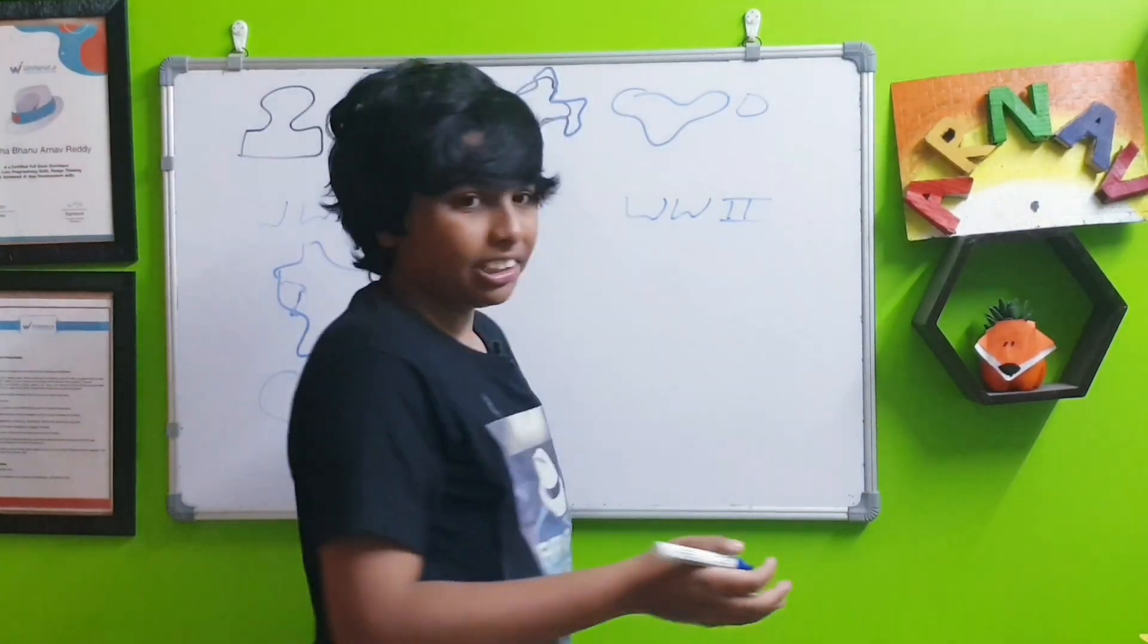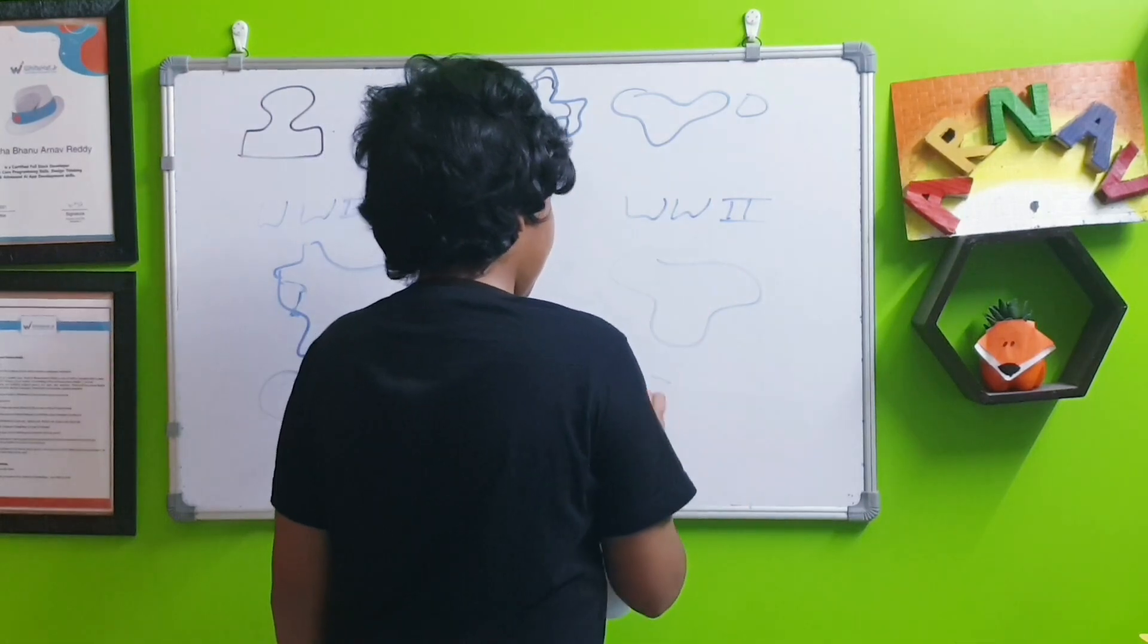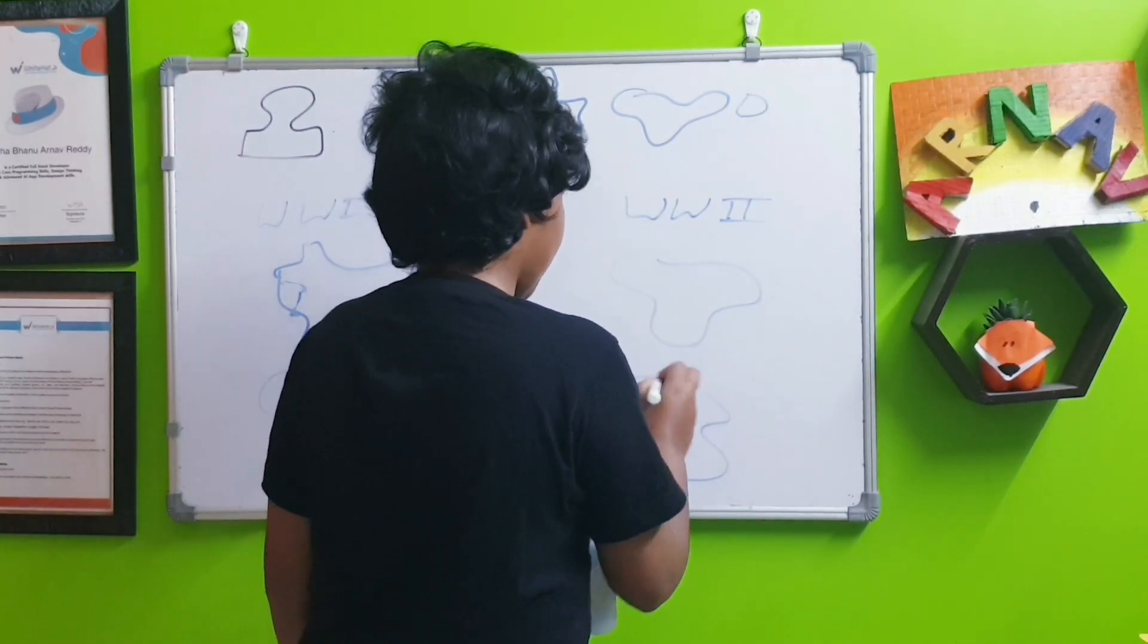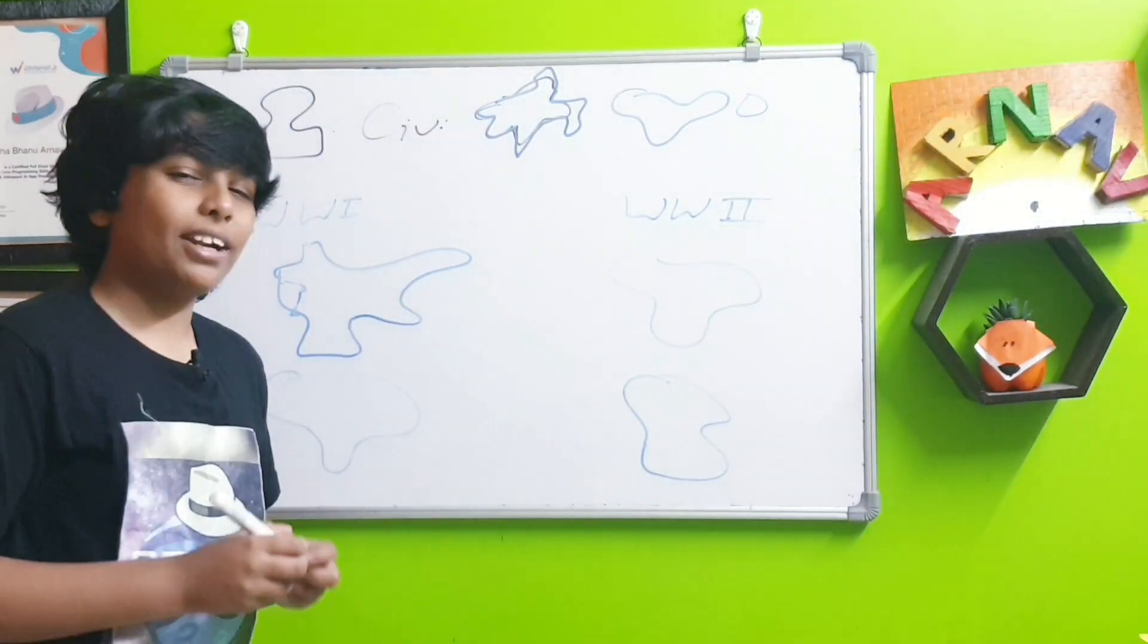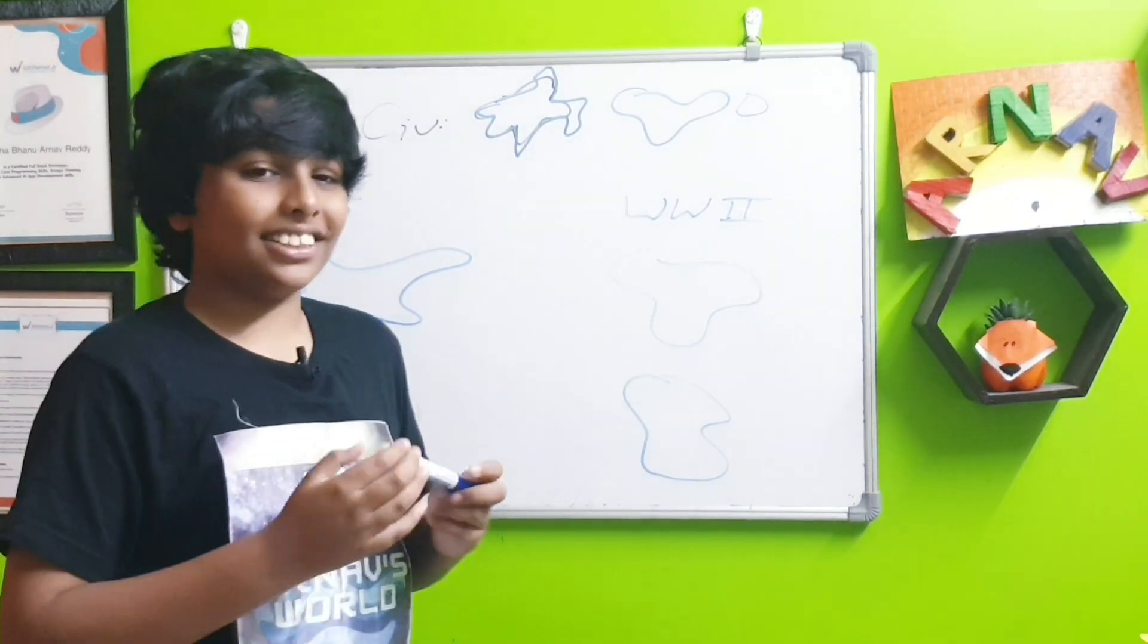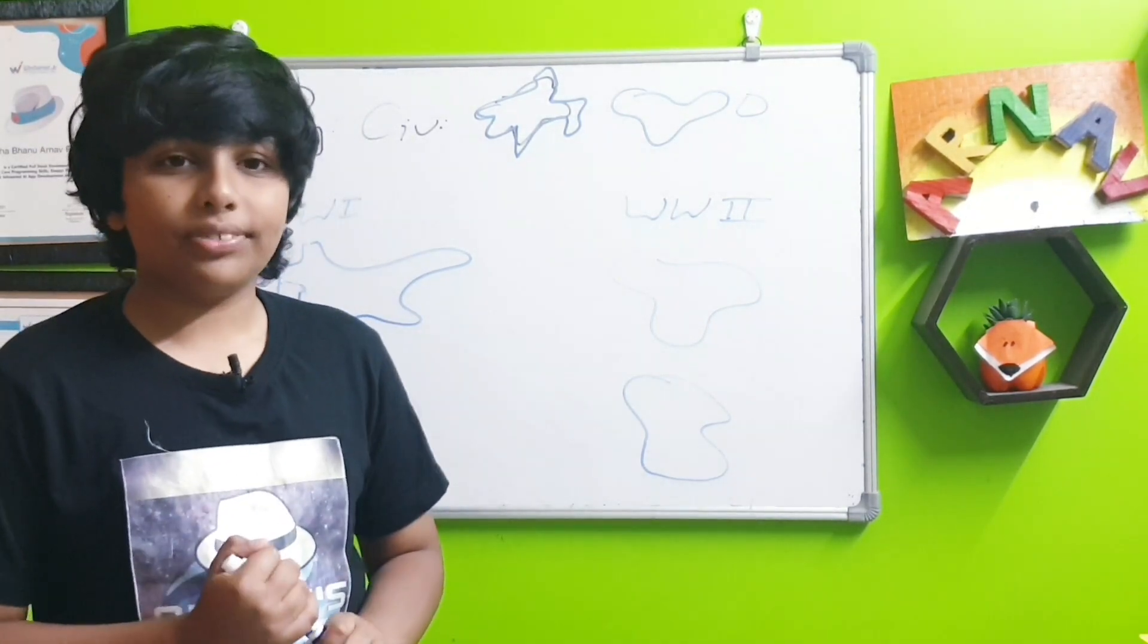Territorial changes of Austria-Hungary. And meanwhile in World War 2, territorial changes of Italy, Germany. Why am I drawing like this? So practically, territorial changes of the countries for a while.